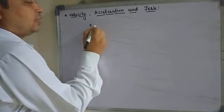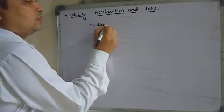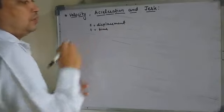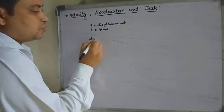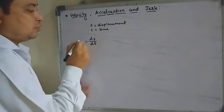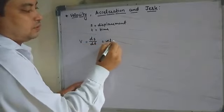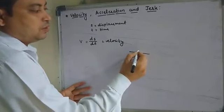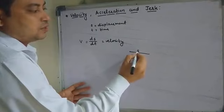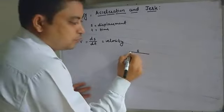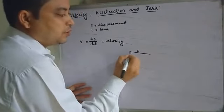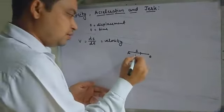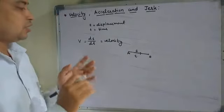Suppose S is the displacement and T is the time. A particle moves from one point to another point in a particular direction — that is displacement. And the rate of change of displacement with respect to time is called velocity.